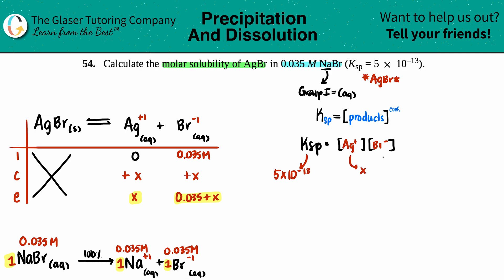Ag is x, and the Br- is 0.035 plus x. But we're going to now assume - we always assume first, and then if we can't do it, then we have to do the quadratic. But we assume that since this Ksp is so low, that means that this change, this increase in some number, is so small that you're not even going to notice it, and that the initial is roughly going to be the same as the end. So 0.035.